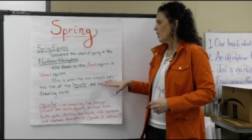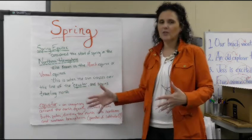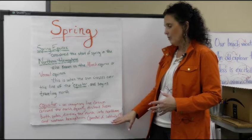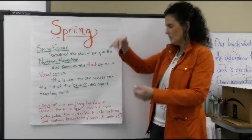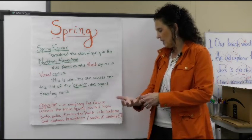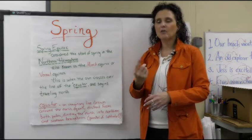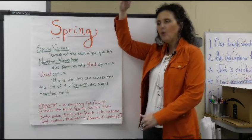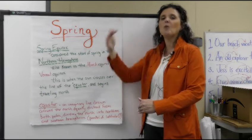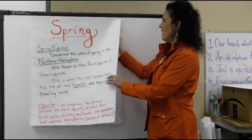The spring equinox is when the sun crosses over the line of the equator and begins traveling north. The equator is the imaginary line drawn around the Earth, equally distant from both poles — the north pole and south pole — dividing the Earth into the northern and southern hemispheres. The parallel of that latitude is zero degrees. Right now, as it's spring here, when it becomes summer in the Northern Hemisphere, it'll become winter in the Southern Hemisphere, and vice versa. That has to do with their distance away from the sun.